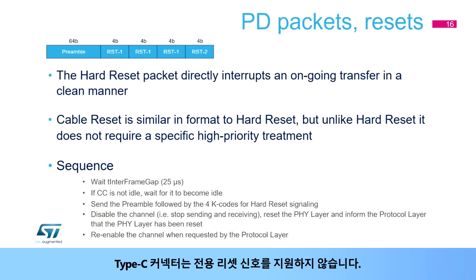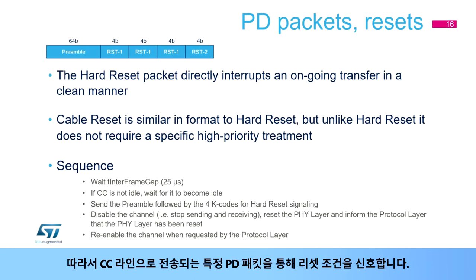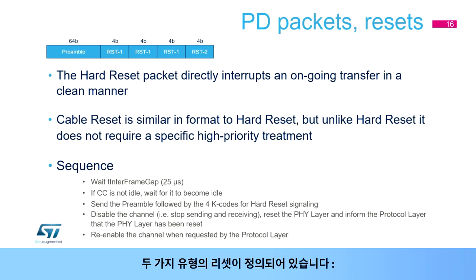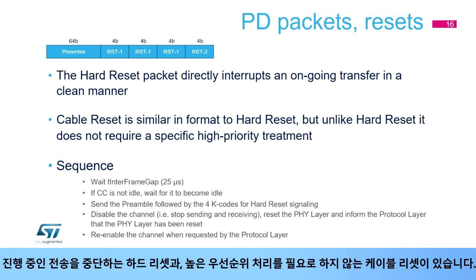The Type-C connector does not support a dedicated reset signal. Consequently, reset conditions are signaled by using specific PD packets transferred over the CC line. Two types of reset are defined: hard reset, which aborts ongoing transfers, and cable reset, which does not require high priority treatment.